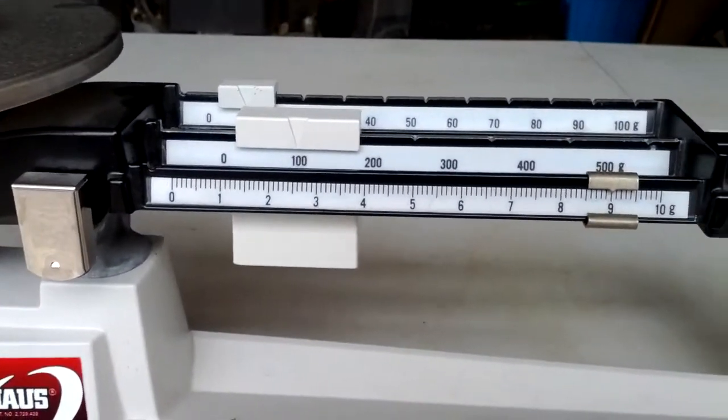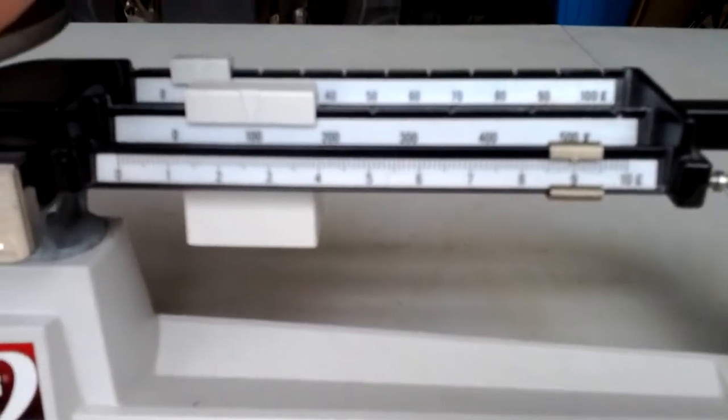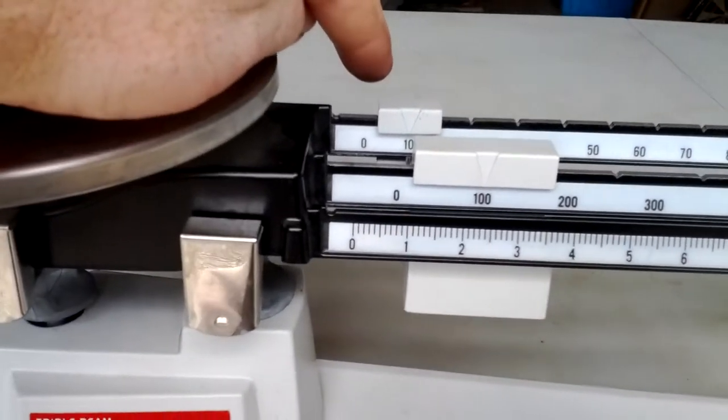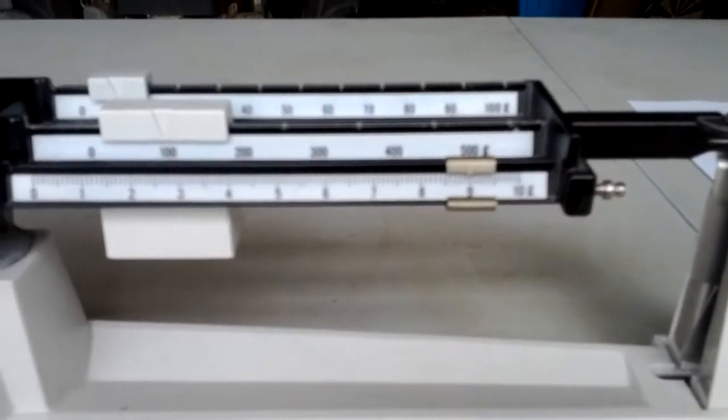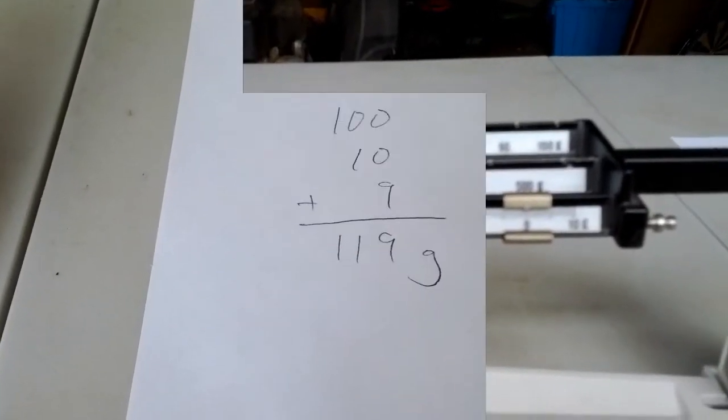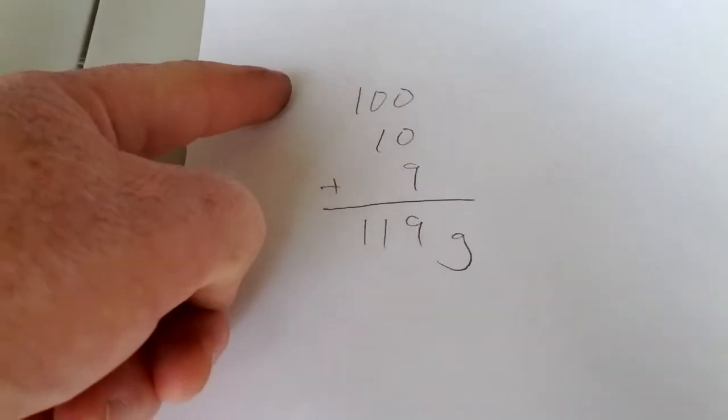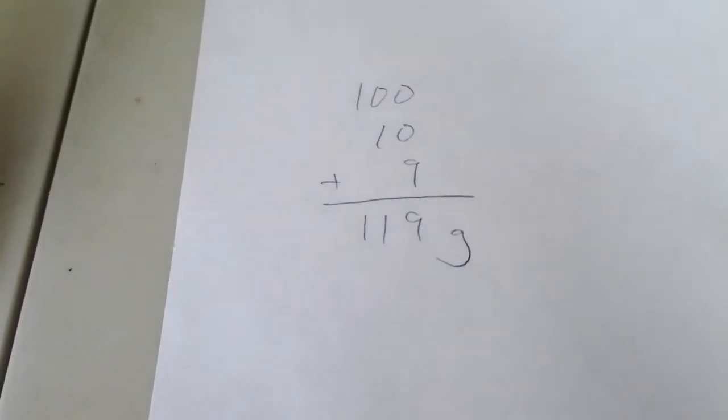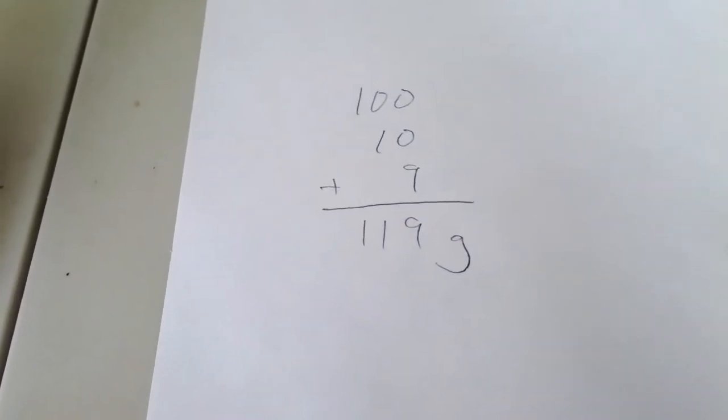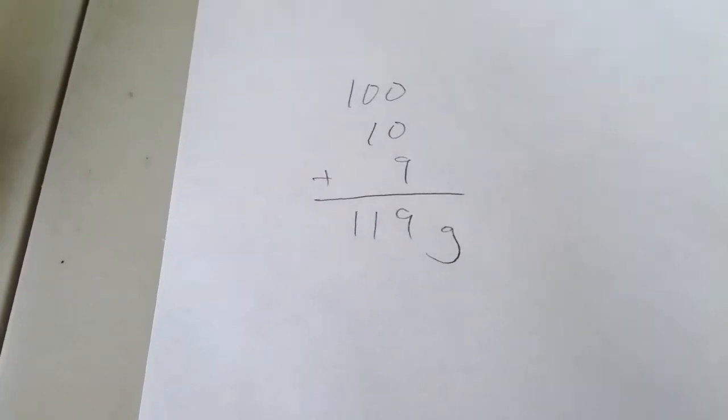So how do we read this thing? It's one hundred and ten and nine. So how do we put that together? The hundreds rider was at a hundred. So we write down a hundred. The tens rider was at ten, so we wrote down ten. And the ones rider was at nine, so we wrote down nine. You add those all together and it's a hundred and nineteen grams.